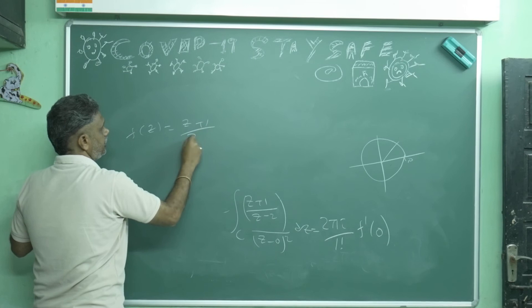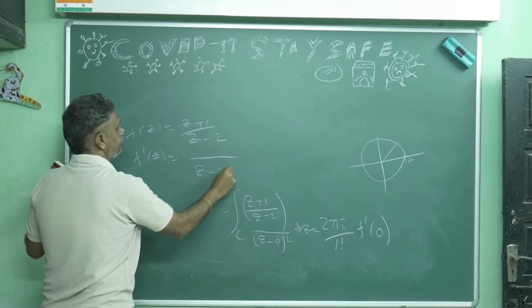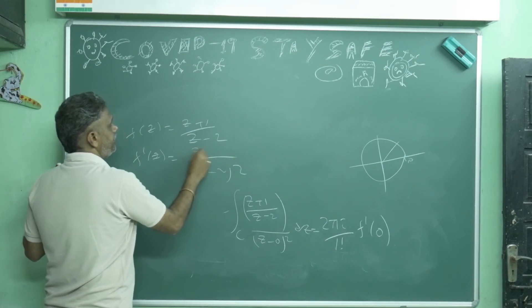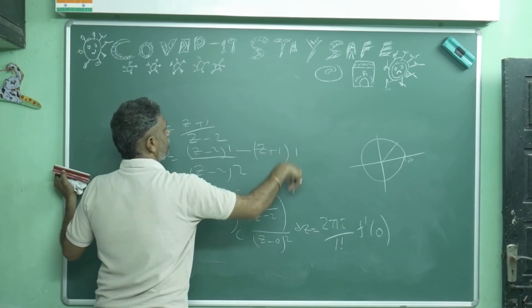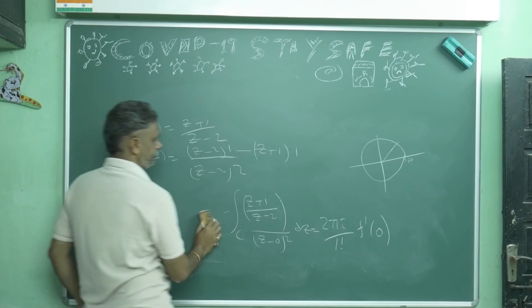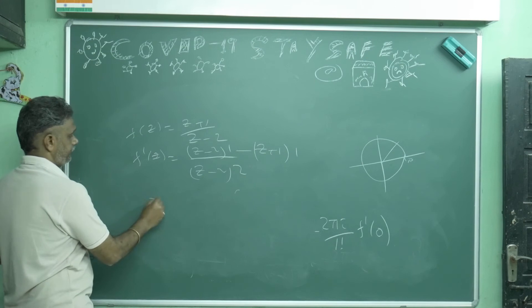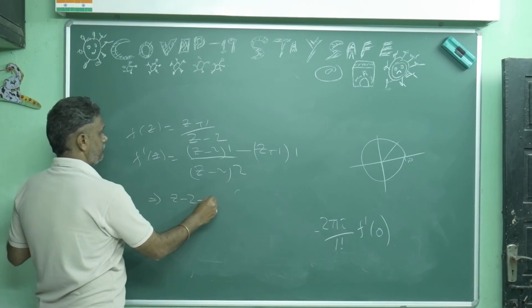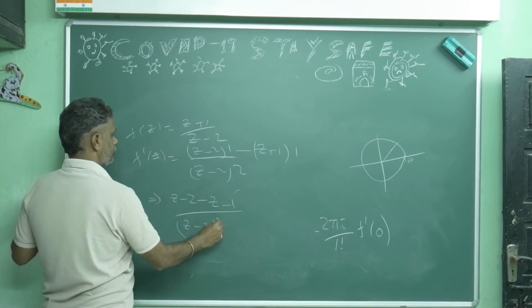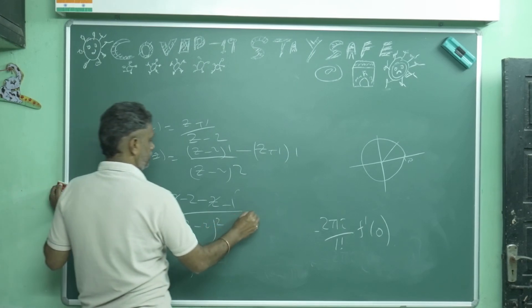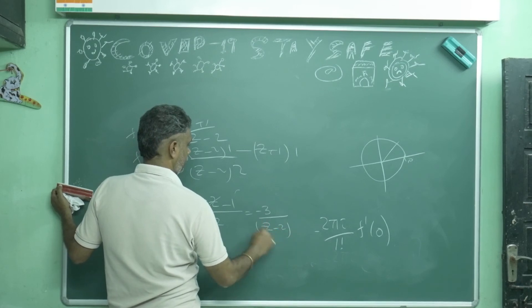f dash z, what you will get? Denominator squared: denominator into differentiation of numerator minus numerator into differentiation of denominator. So this becomes (z-2) minus (z+1) by (z-2) whole square. This is minus 3 by (z-2) whole square.